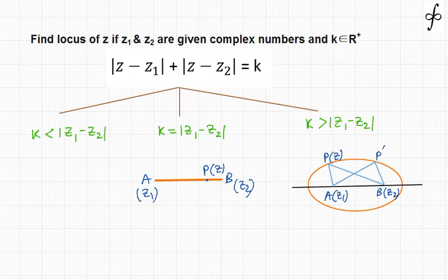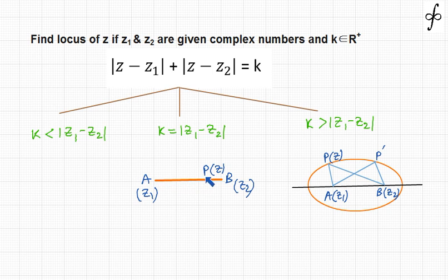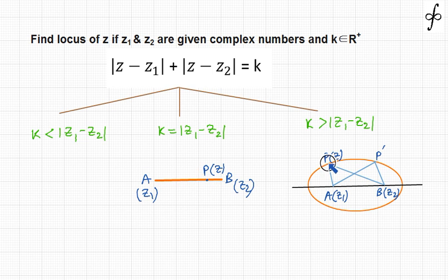We can analyze the situation by taking locus point P as z, and two given points A and B as z1 and z2. You can see that the distance PA plus PB — this distance is PA and this is PB. When P lies on the segment AB, PA + PB equals the distance between A and B. If P is lying somewhere off the segment, then PA + PB is definitely going to be more than AB.